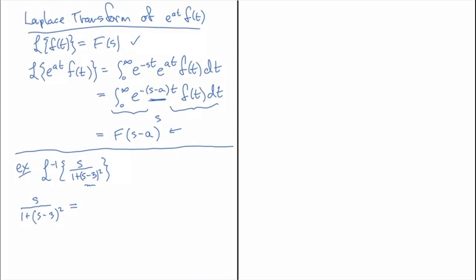So in the numerator what we really like is s minus three, because if we had s minus three in the numerator then we would have a perfect shift of the cosine transform. And so, well we can't just subtract three from the numerator, but if we add three and subtract three then that doesn't change the numerator at all, it just looks like it.